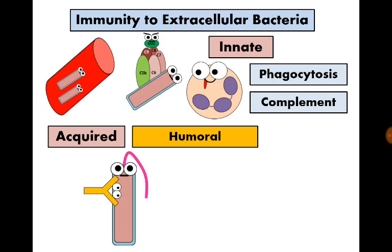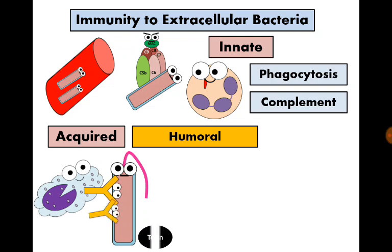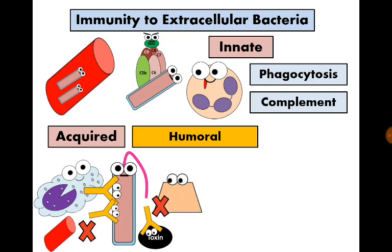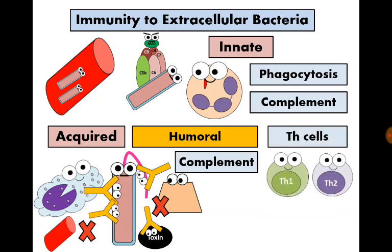Antibodies will facilitate phagocytosis and killing, neutralize the bacteria and their toxins, attach to their pili preventing them from adherence to cells, and activate the complement system through the classical pathway. T-helper cells will be activated — mainly T-helper 2 cells that help antibody production — and also T-helper 1 cells have a role in activating macrophages and causing local inflammation, as those bacteria commonly cause abscess.